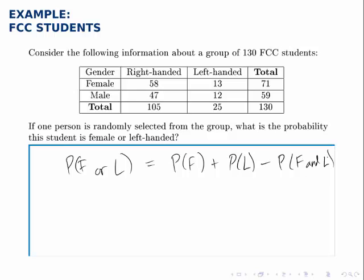We have to worry about subtracting off the overlap in this case because these are not mutually exclusive. In other words, our randomly selected student could both be female and left-handed.